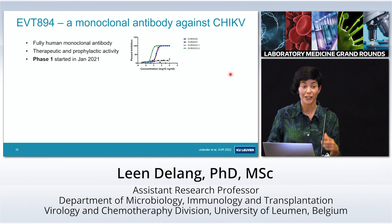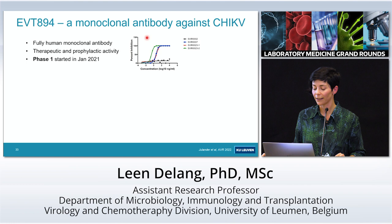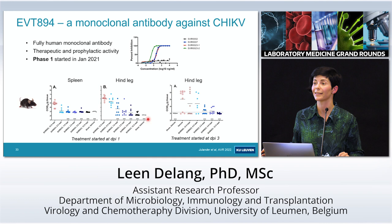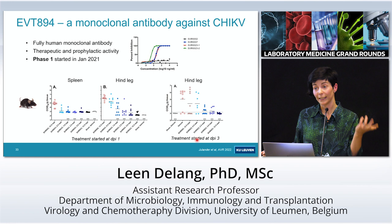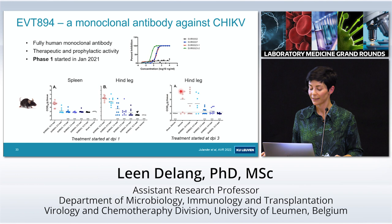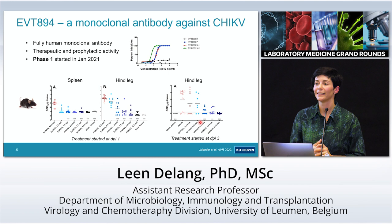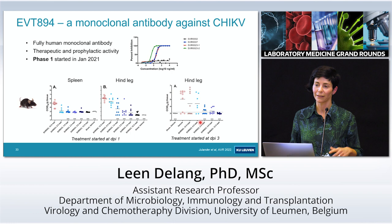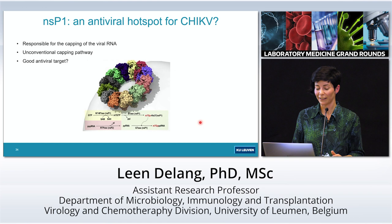For other viruses there's not much going on unfortunately. For chikungunya virus, there's one monoclonal antibody in phase one studies showing in vitro inhibitory effect, and in a mouse model there was a good reduction of virus in the spleen and hind leg, even when treatment started at day three post-infection at peak viremia. However, an antibody that must be given IV cannot be used widely in certain regions — it would be better to have a small molecule that can be given orally, and we're not there yet for chikungunya.